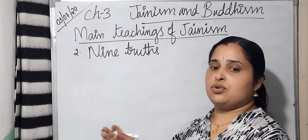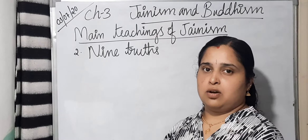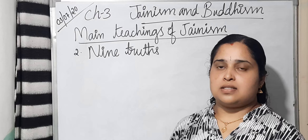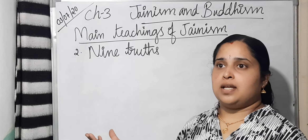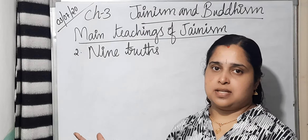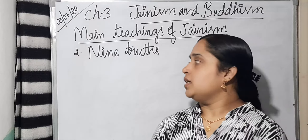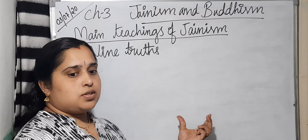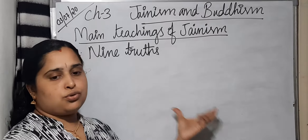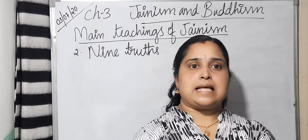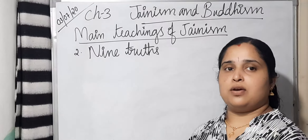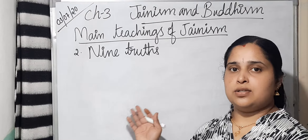According to Jain philosophy, the knowledge of these 9 Truths is essential and the only way of salvation through renunciation. Renunciation means no longer having the want or desire for money or property. If we leave all these things, we can attain salvation — that is, Moksha. These 9 Truths have a central place in the philosophy of Jainism.